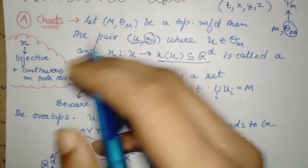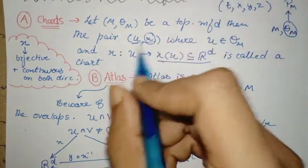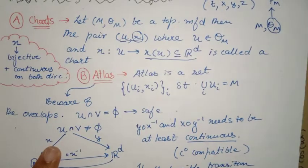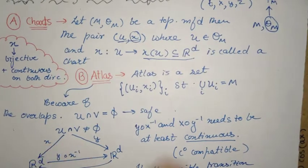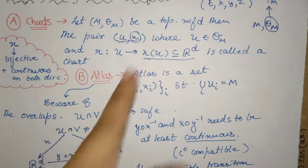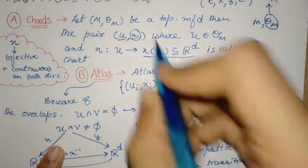They are bijective and continuous in both directions - that is, they are invertible and the inverse is also continuous. That means the push forward and pull back of open sets are open. This is a nice terminology to remember.